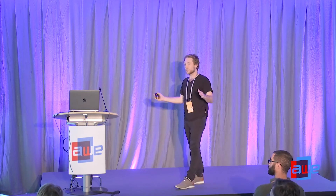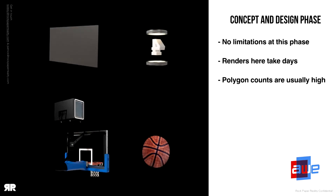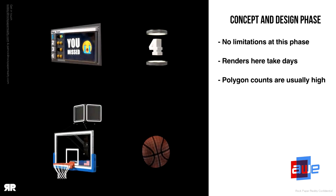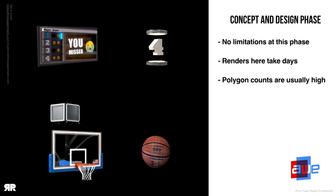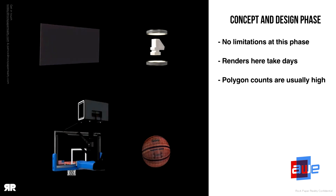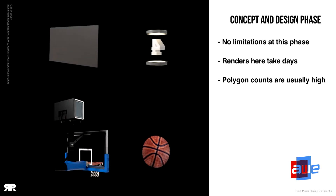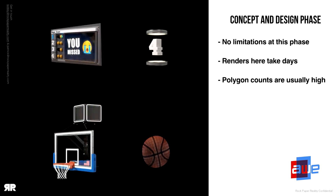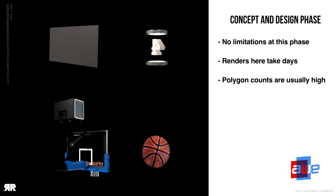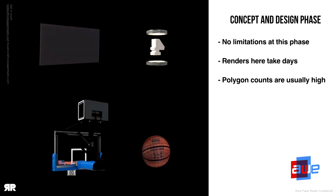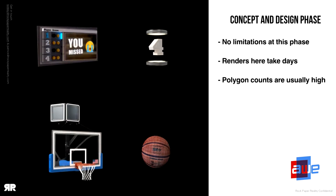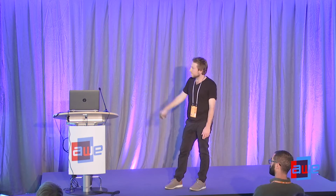You start with the art phase — understanding what you want and what you want it to look like. The basketball hoop is probably a 500,000-polygon model, and the basketball I did photogrammetry on came out to about two million polygons. The real takeaway is that all of this took days to render as far as look development is concerned.